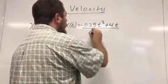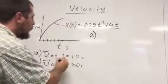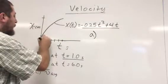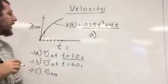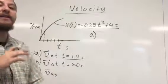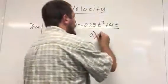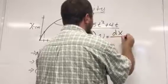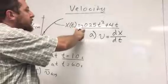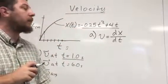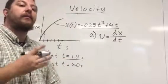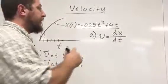For part A, I want to know what the velocity is when my clock is reading one second. After one second, I want to know what my velocity is at that particular point in time. Now as we said before, velocity is equal to the derivative of position with respect to time. So what I need to do is take the derivative of this function and then plug in one second into my resulting formula, and that will give me the velocity at that particular point in time.